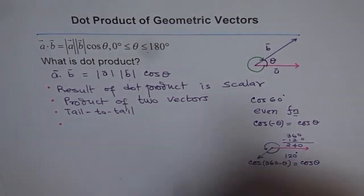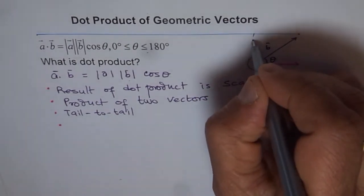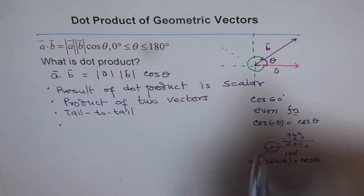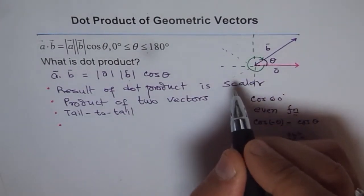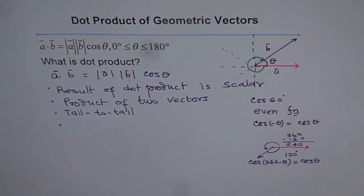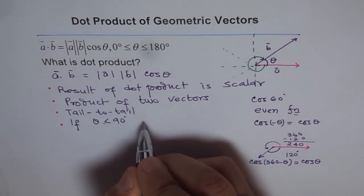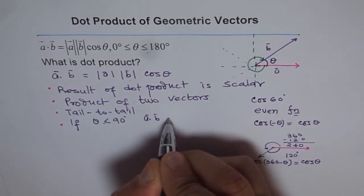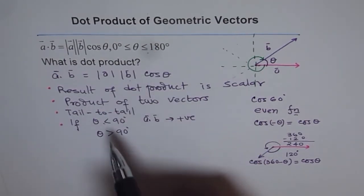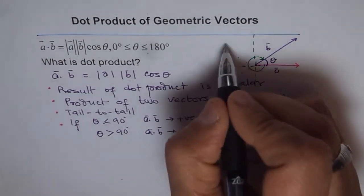Let's look at what happens with different angle values using a coordinate plane. If vector B is in the second or third quadrant region, cosine will be negative. Specifically, if theta is less than 90 degrees, then A dot B will be positive. If theta is greater than 90 degrees and less than 180 degrees, then A dot B will be negative since cosine is negative in the second quadrant. So the sign of the dot product depends on the angle between the two vectors.